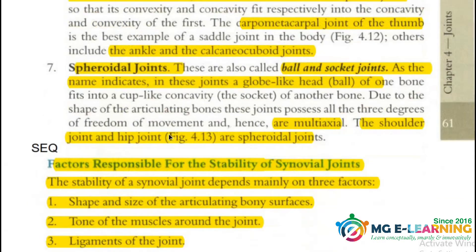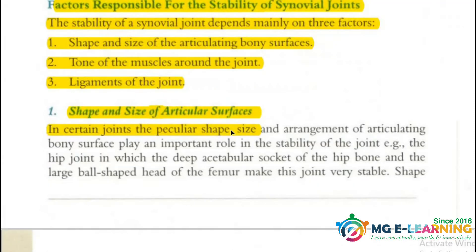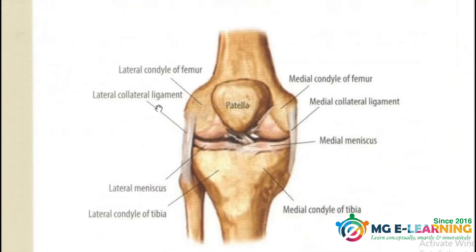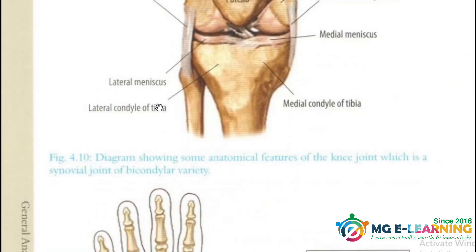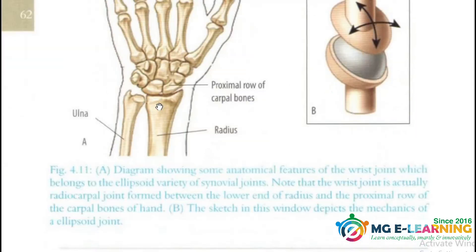Next are the factors responsible for the stability of the synovial joint — the structures which provide stability. You have to know all the points. There are three points with a brief explanation each.